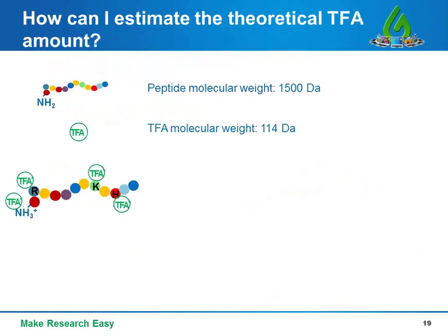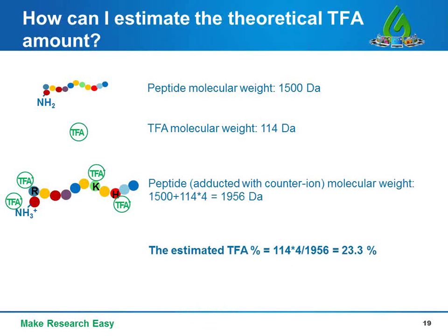As mentioned, TFA content can comprise as much as 50% of the peptide content, which is bad news for bioassays since high TFA levels are toxic to cells. To estimate the theoretical TFA content, take a peptide with a molecular weight of 1,500 Daltons. TFA has a molecular weight of 114 Daltons. Since this peptide has four TFA binding sites, the peptide-TFA adduct molecular weight is 1,956 Daltons. Therefore, the estimated TFA content is 23.3%.